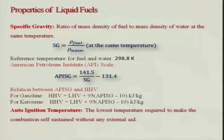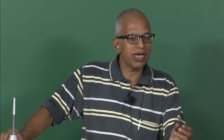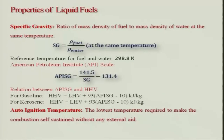Self-ignition temperature or auto-ignition temperature is the lowest temperature required to make combustion self-sustained without any external ignition source. If I remove the ignition source the combustion will continue on its own. If the auto-ignition temperature is low, the fuel is very easy to ignite because only a small amount of energy is needed to reach that temperature, after which combustion is self-sustained.